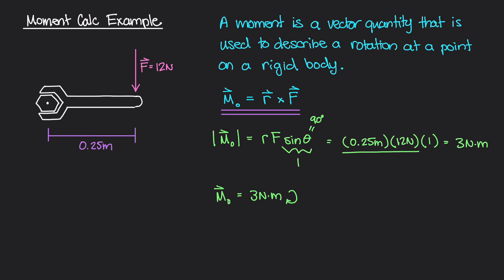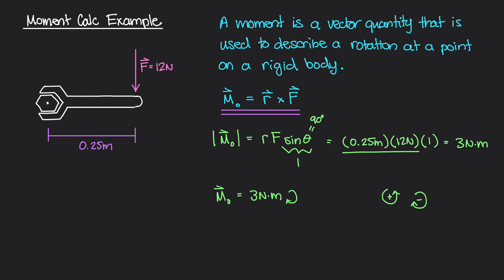Remember from the last video: counterclockwise is positive, so clockwise is negative. This means the moment is negative 3 newton meters. In terms of 3D direction, that means the moment is acting into the page, because the axis coming out of the page toward you is defined as positive. A clockwise rotation corresponds to the moment vector pointing into the page.